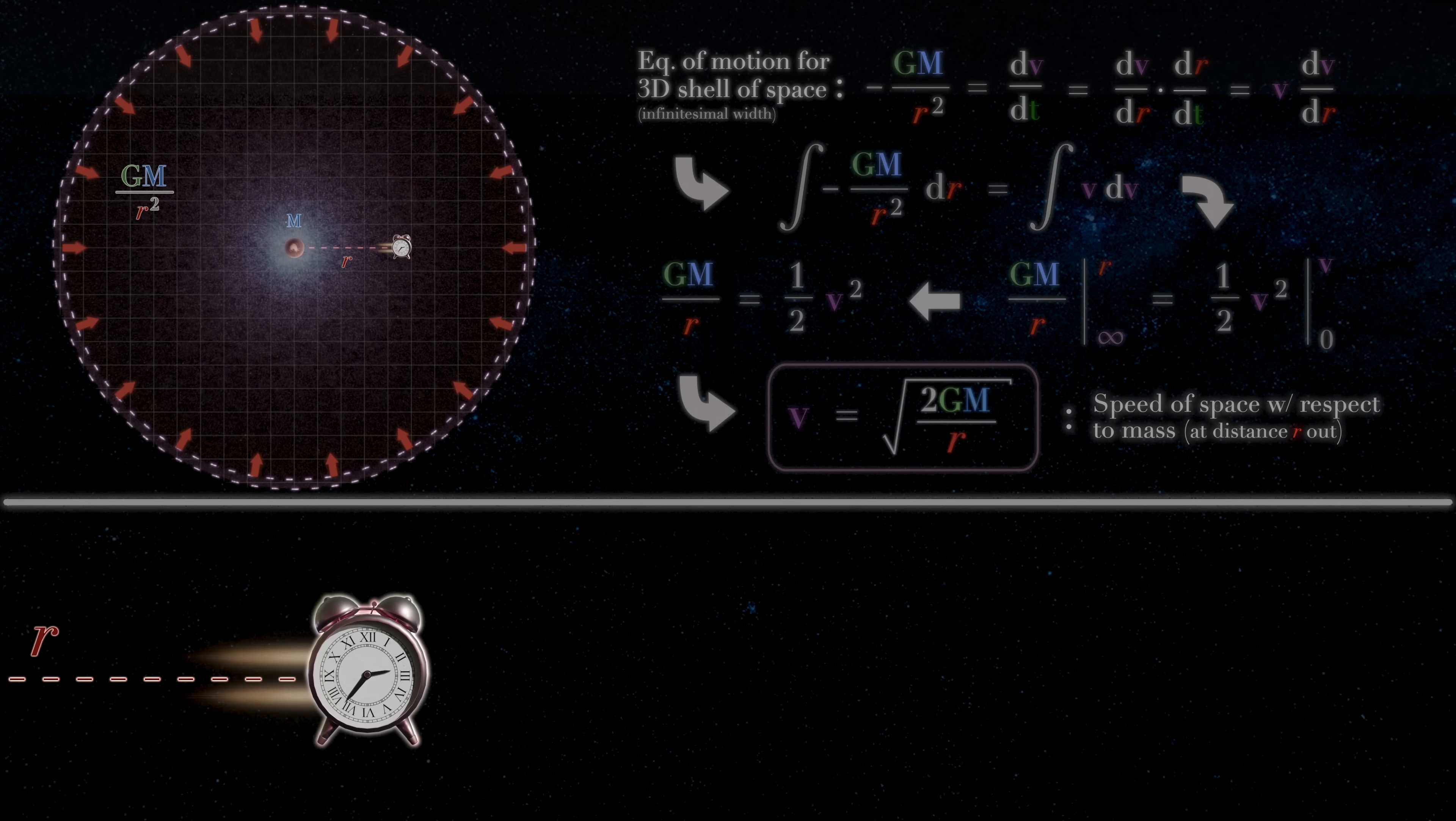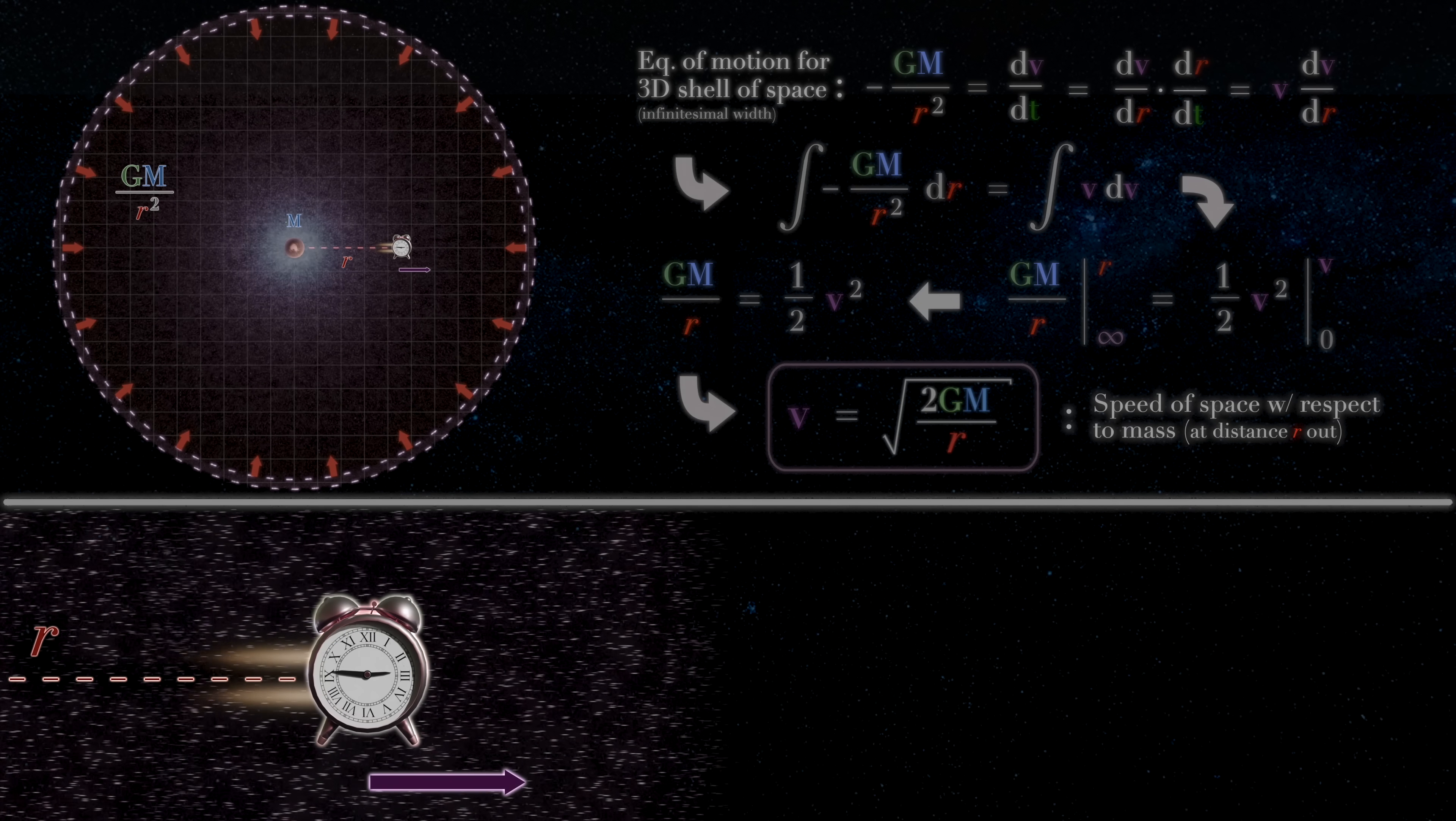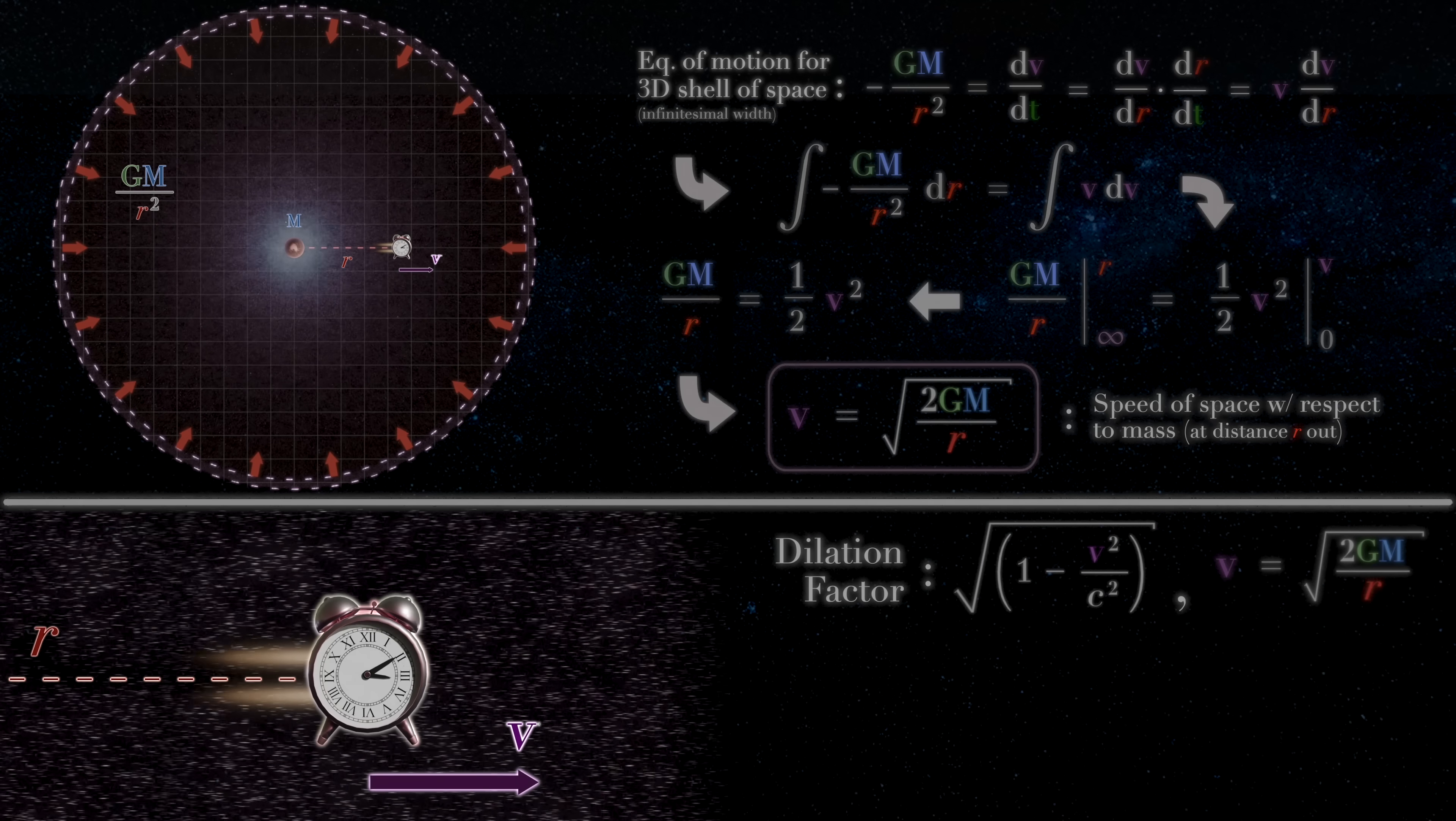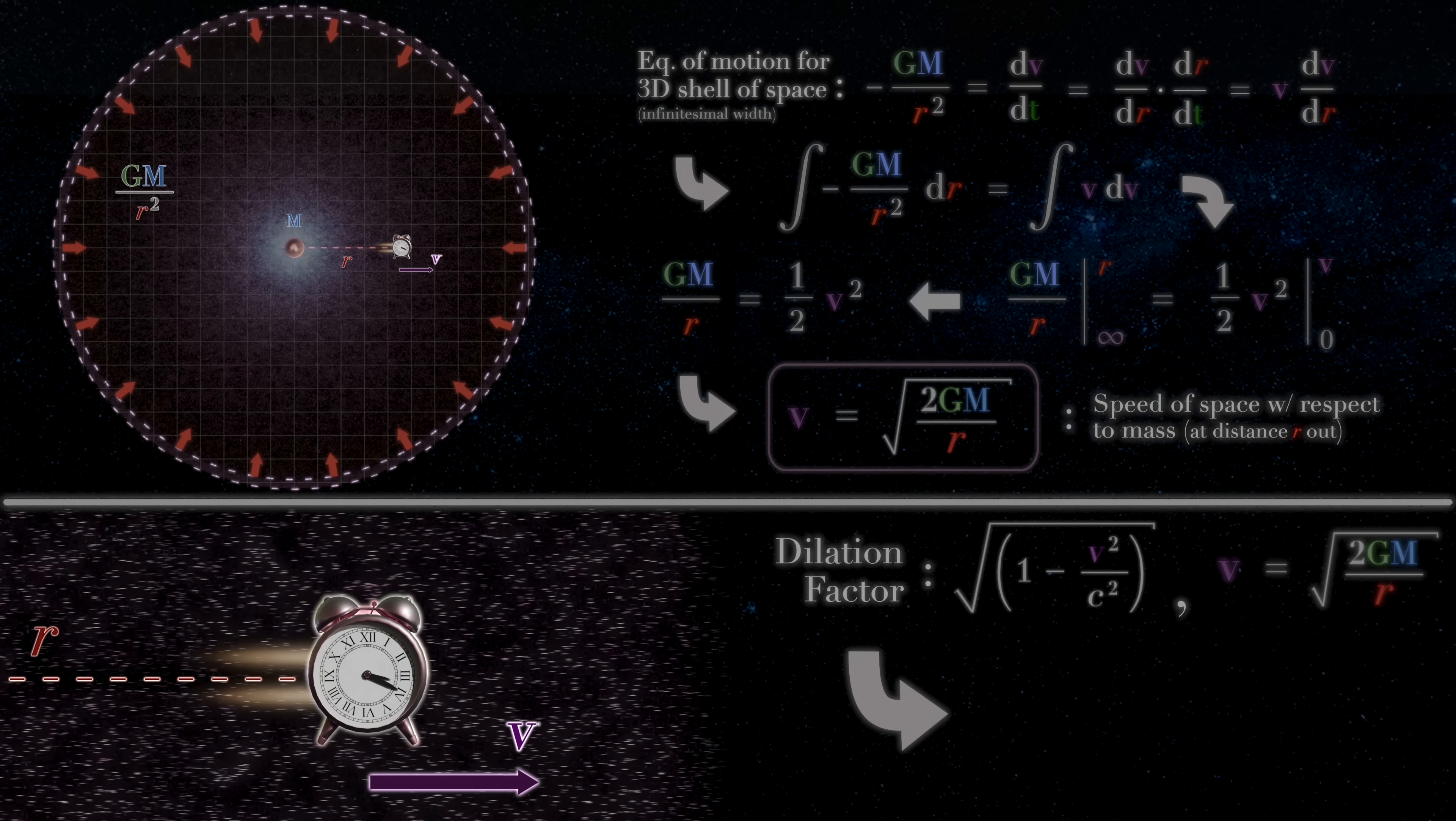Clocks stationary with respect to this mass are therefore traveling through space at this velocity. And hence, their dilation amount can be calculated using the normal relativistic factor.